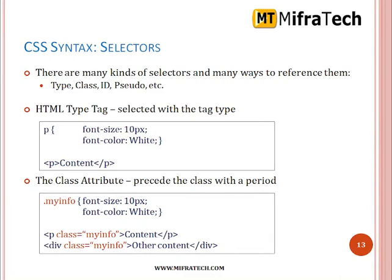Then selectors. There are many kinds of selectors and many ways to reference them: type, class, id, pseudo, etc. HTML type — tag selected with the tag type, for example paragraph font size equal to 10 pixels, font color white. For class attribute: dot myinfo, font size 10 pixels, font color white — here we mention the class attribute. Class equals myinfo, because we created myinfo previously, and both the division myinfo content and other content will be applied simultaneously.